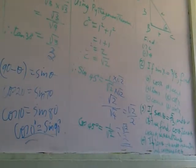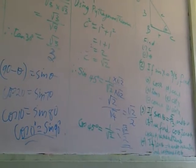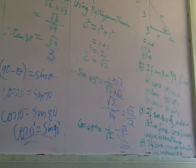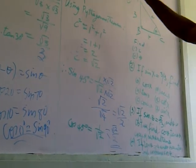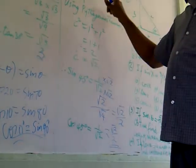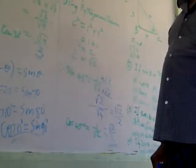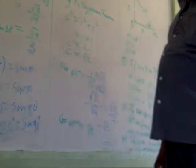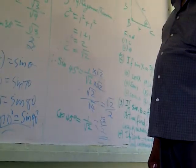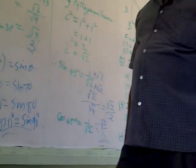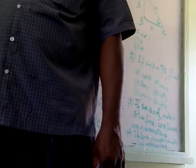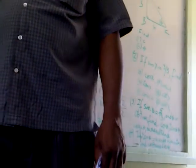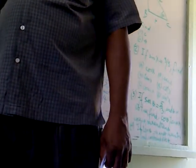Now there are two ways to know this: memorize it, or go through the steps. For the 30 and 60 degree triangle, draw an equilateral triangle. Then draw a perpendicular bisector.